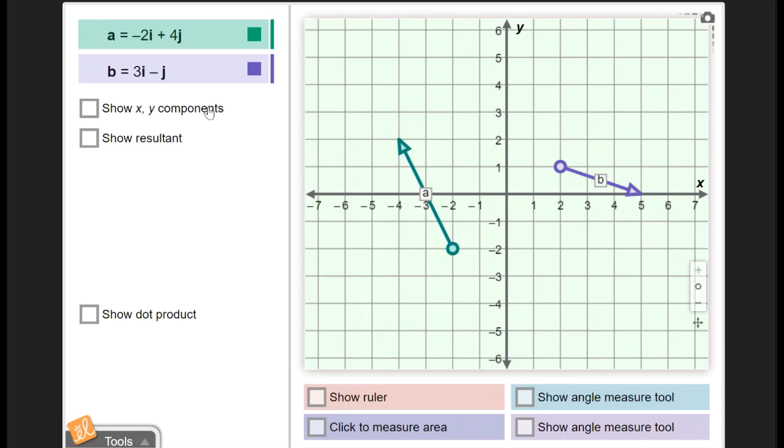Anytime you see i, it's referring to how many units along the x-axis, and j is how many units along the y-axis. It's just another way of describing the coordinates for any of the vectors.